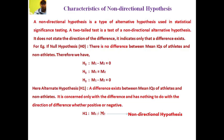Characteristics of non-directional hypothesis. A non-directional hypothesis is a type of alternate hypothesis used in statistical significance testing. A two-tailed test is a test of a non-directional alternative hypothesis. It does not state the direction of the difference — it indicates only that a difference exists.